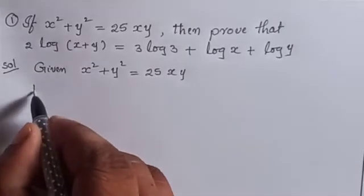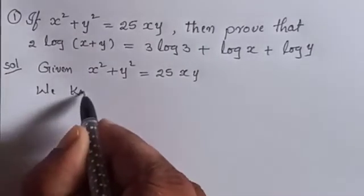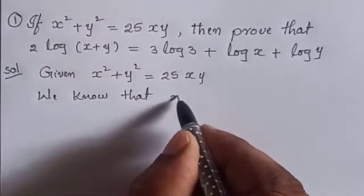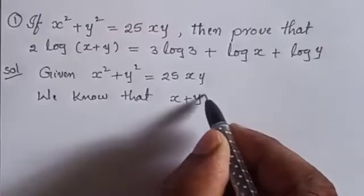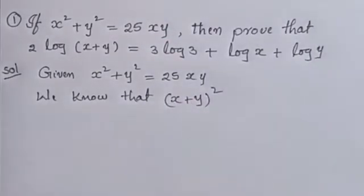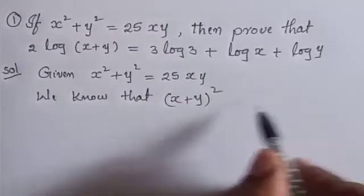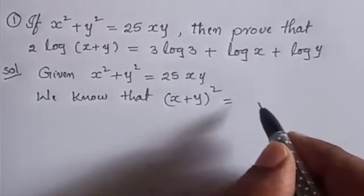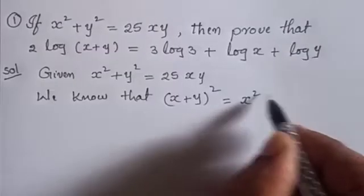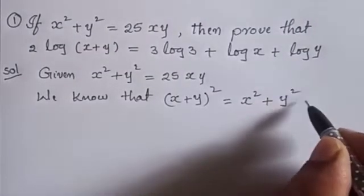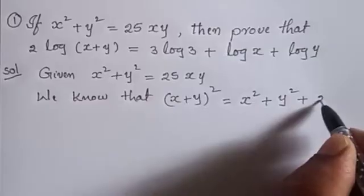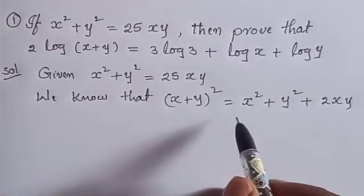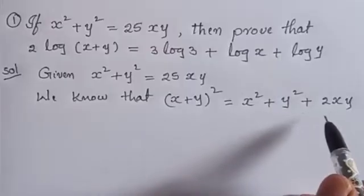We know that x plus y whole square. What is x plus y whole square? Formula: x plus y whole square is equal to x square plus y square plus 2xy. That is the formula: x plus y whole square is equal to x square plus y square plus 2xy.